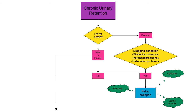We then look at if the patient is female and whether they have symptoms such as a dragging sensation, stress incontinence, increased frequency of urination, and difficulty passing stools. If they do have these symptoms, we could think about a pelvic prolapse — this can be caused by a cystocele, uterine prolapse, or a rectocele.